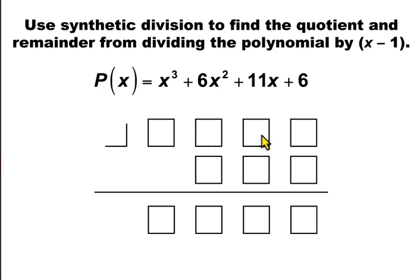These four placeholders are for each of the coefficients of the polynomial. Since this is a polynomial of degree 3, there are four placeholders, one for each term.